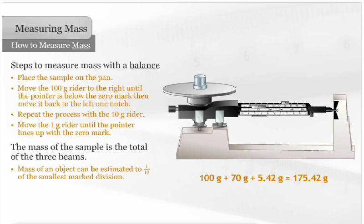The mass of an object can be estimated to one-tenth of the smallest marked division. The smallest division on the balance below is one-tenth of a gram, so the mass can be recorded to one-hundredth of a gram.